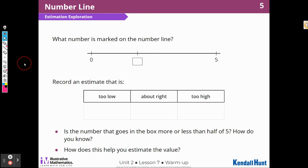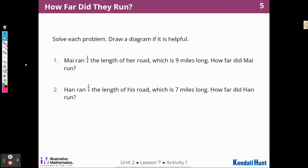Let's look at Activity 1. Solve each problem. Draw a diagram if it's helpful. So my first problem here says, Mai ran 1 fourth the length of her road, which is 9 miles long. How far did Mai run? Well, the first thing I noticed that her road is 9 miles. I'm going to make it long. That's a long road. 9 miles.